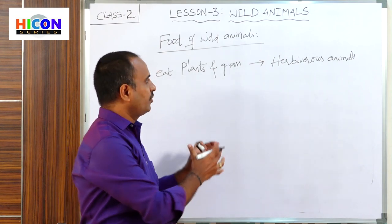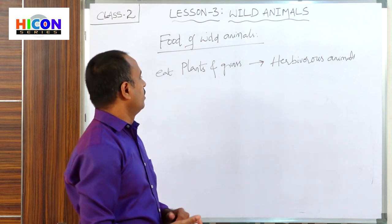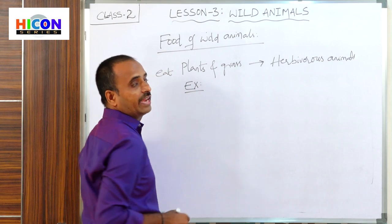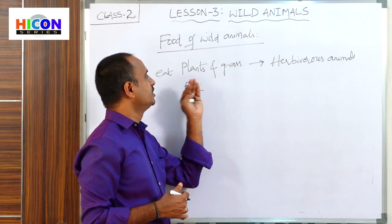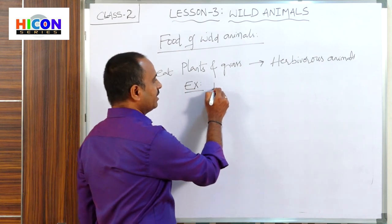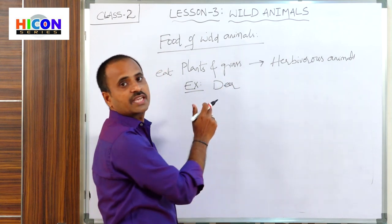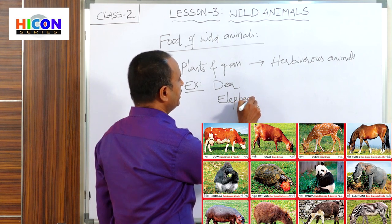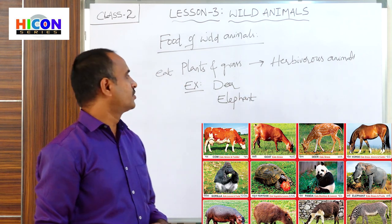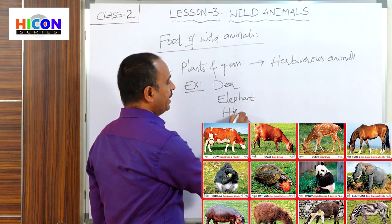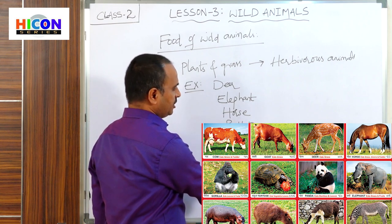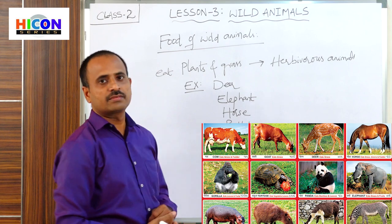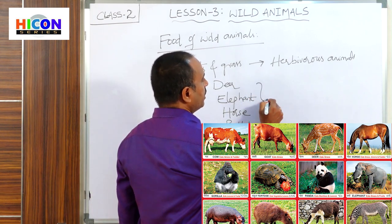Some wild animals eat only plants and grass. Those animals are called herbivorous animals. Examples of herbivorous wild animals are deer, elephant, horse, and rabbit — all of which eat only plants and grass.